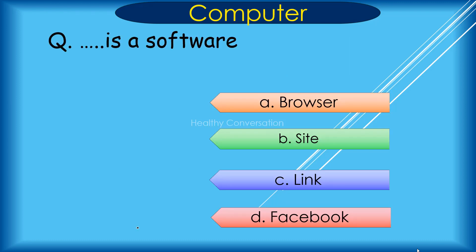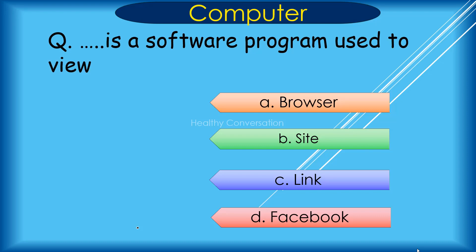Question: Dash is a software program used to view web pages. The options are: A. Browser, B. Site, C. Link, D. Facebook. Correct answer is A. Browser.